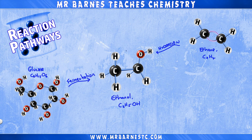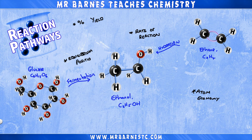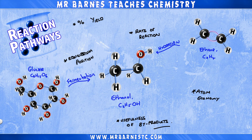But which way is best? To figure this out, scientists look at five main things: the percentage yield, so how much we end up with; the atom economy, how much of our reactants is turned into useful products; the rate of reaction, so can we make it quickly; the equilibrium position, if it's a reversible reaction will it naturally favour our product or the reactants; and finally, the usefulness of the byproduct — if we can't get 100% atom economy, can we use the byproducts so they don't go to waste?